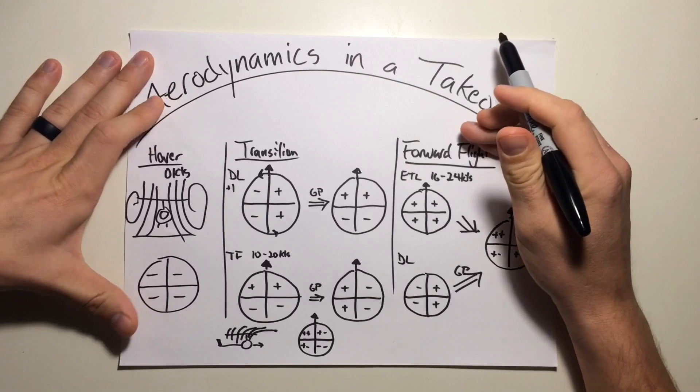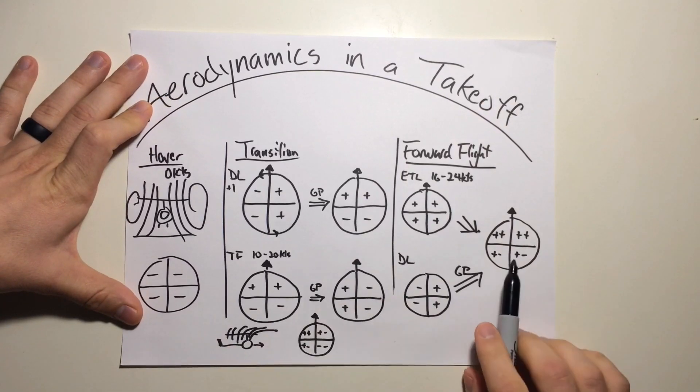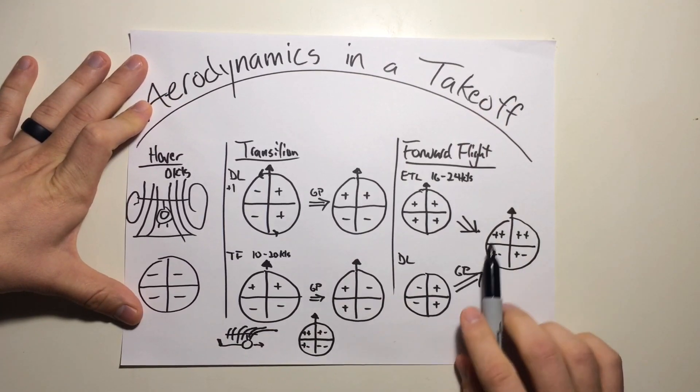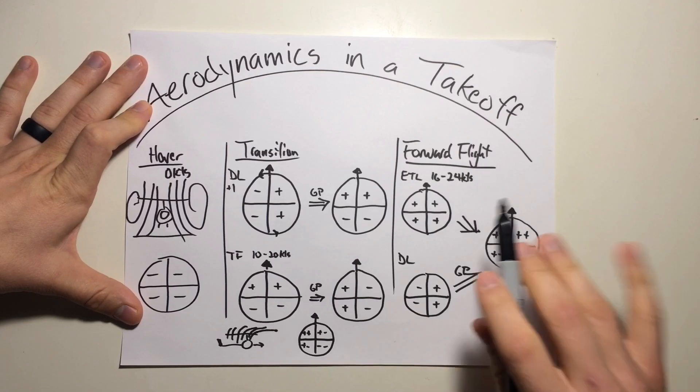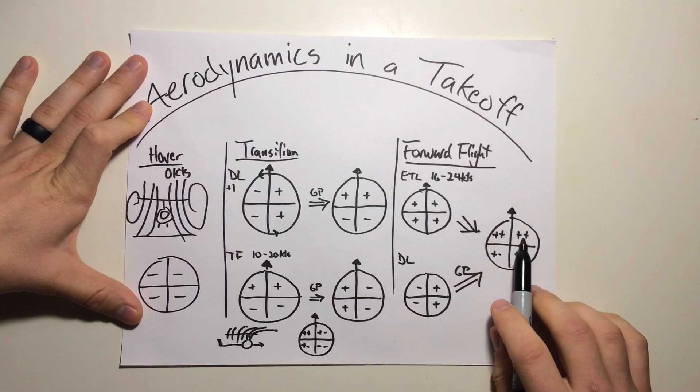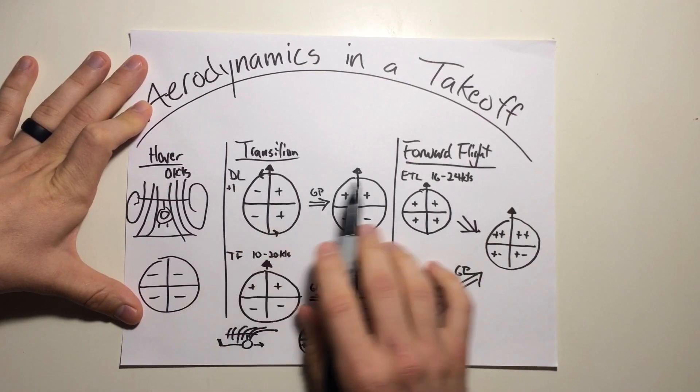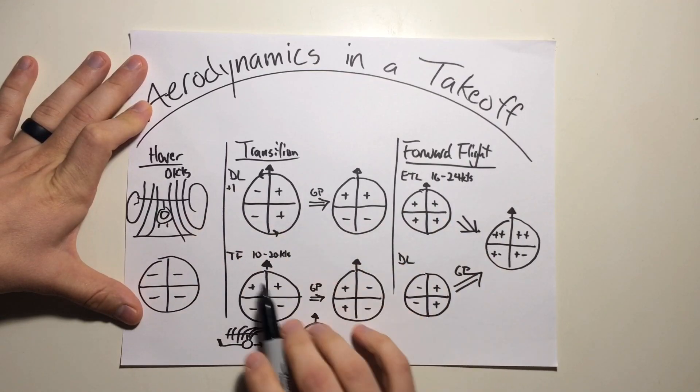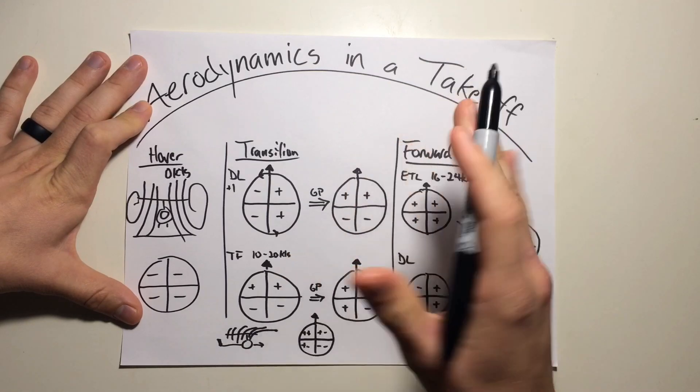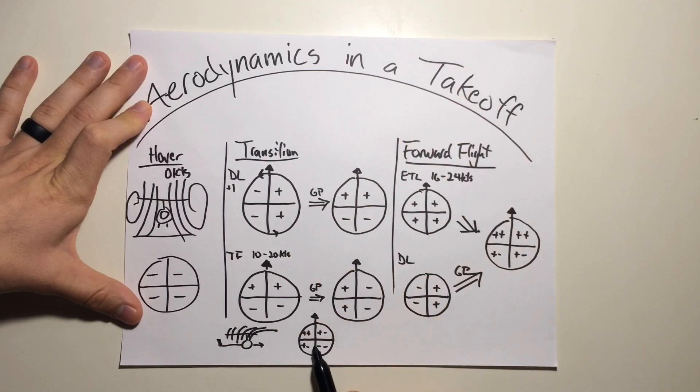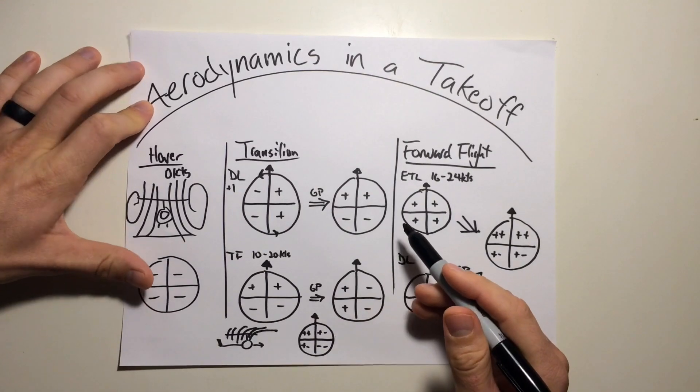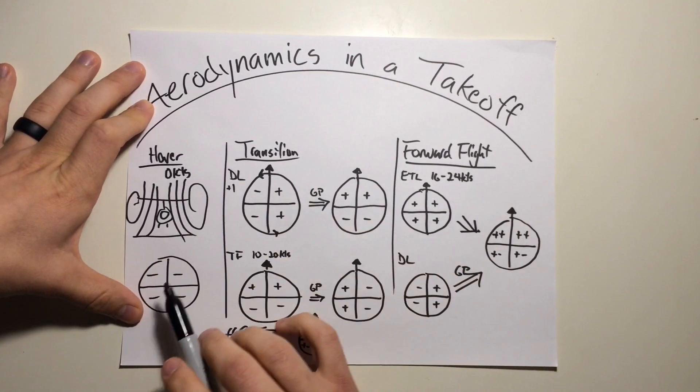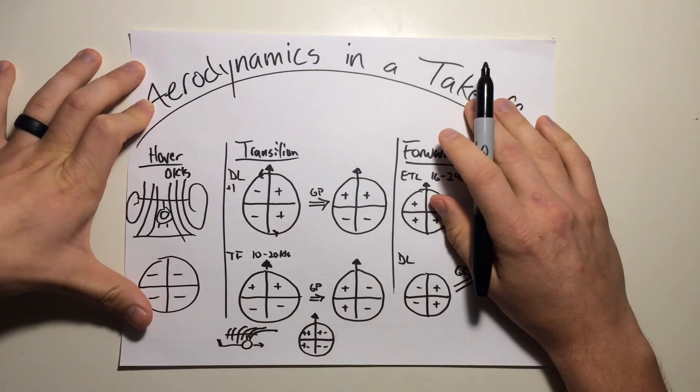Vice versa, when we're landing, it's going to be reversed. So we're going from this mode of flight, efficient across the entire disk with a little bit more lift created on the front half, getting down between less than ETL but greater than zero knots. We're in this environment of transition where we're pitching up, rolling to the right. That's where we're having these aerodynamics on the rotor disk, and then down to a hover, decrease in efficiency across the entire rotor disk.